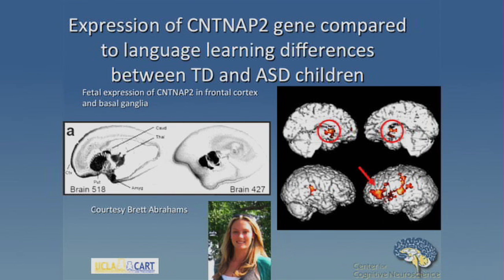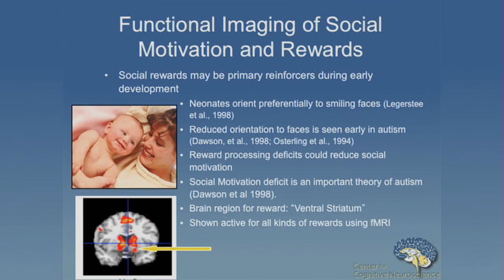We liked this task because it's entirely implicit — there's no difference in behavior that can explain our results; it's simply that the brain is processing that information differently, in the same areas where we found the CATNAP expression. We're also very interested in social motivation and social reward processing. We think language acquisition is largely dependent upon reciprocal interactions between parents and their children — the rewarding smiles you get back from parents when you pay attention and produce correct language. Social rewards are primary reinforcers during early development. I'm going to focus on one part of the circuitry: the ventral striatum, which is active during reward processing, particularly true for social rewards.